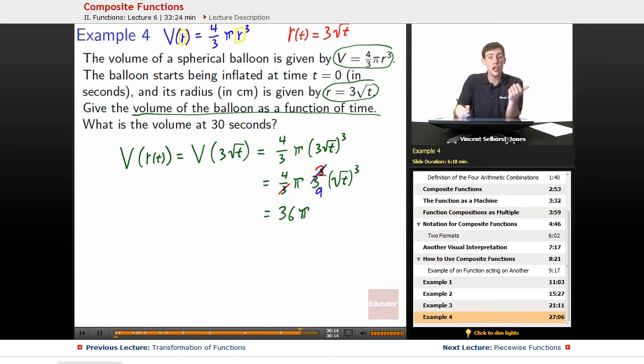What about root t cubed? Well remember, root t squared would just be equal to t on its own. So root t cubed is just one extra root t left over, so that gives us times t root t. And there we are.